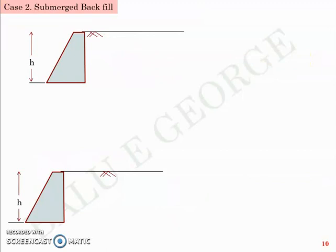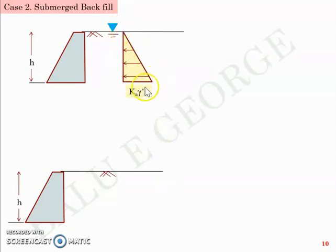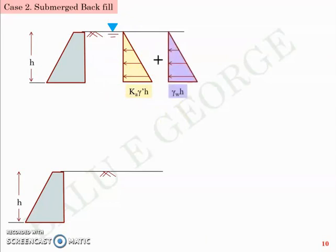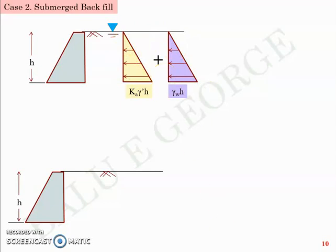Case 2 is a submerged backfill: the retaining wall of height H retains soil that is fully submerged — the water table is at the top. In this condition, the earth pressure has a base width of Ka·γ'·H from the soil, plus an additional triangle with base γ_w·H from water pressure. So the total base length is Ka·γ'·H + γ_w·H, but with two different slopes. You must add the areas of both triangles separately to get the resultant Pa for active pressure.